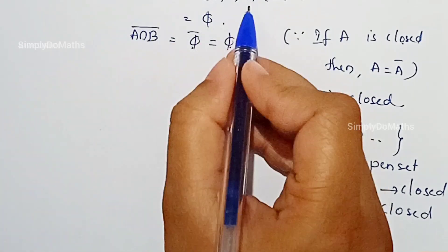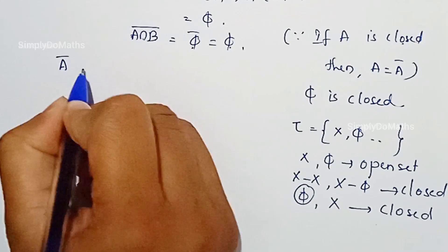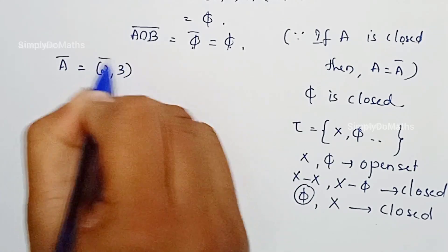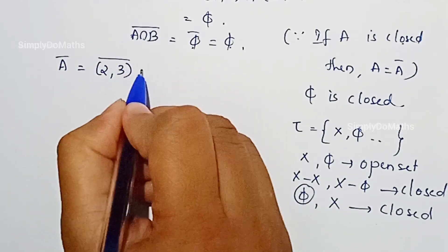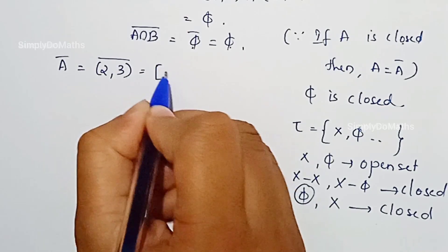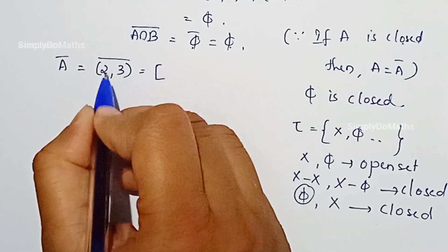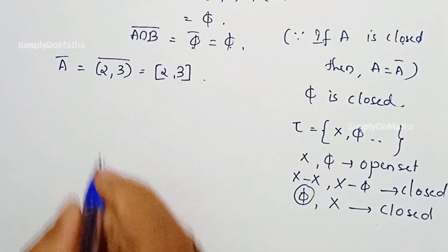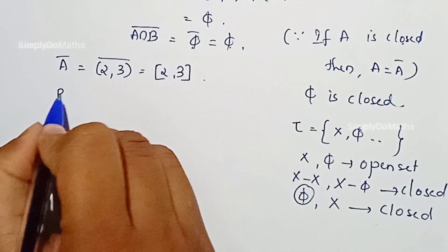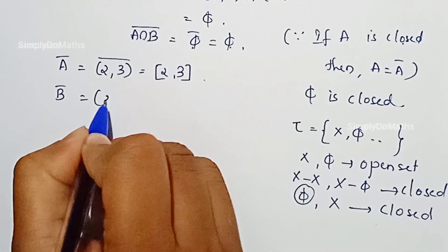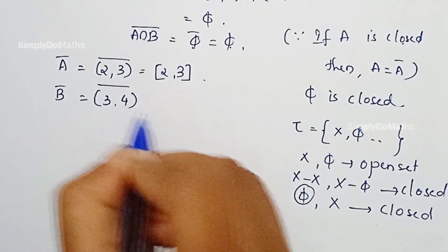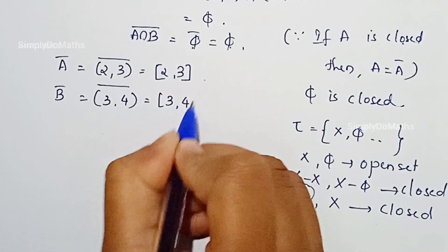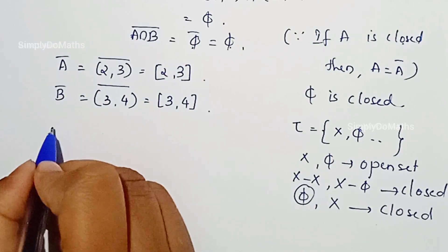So the closure of A intersection B is the closure of empty, which is empty itself. Now let us find the closure of A. The closure of the open interval (2, 3) is the closed interval [2, 3]. And the closure of B is the closure of the open interval (3, 4), which is the closed interval [3, 4].